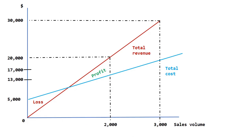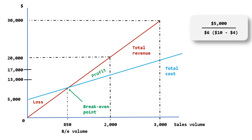With both the total revenue and total cost lines plotted, the breakeven point is where the two lines cross — where total revenue equals total cost and neither a profit nor a loss is made. Tracking this back to the x-axis shows the breakeven point at approximately 850 units. Using the formula, this is $5,000 divided by $6 (the $10 selling price minus the $4 variable cost), giving 834 units. We always round up to ensure a small profit rather than a small loss. Sales volumes to the left of the breakeven point result in a loss; volumes to the right generate a profit.